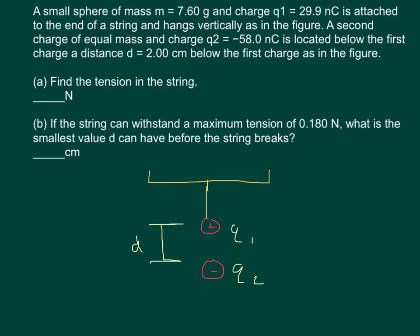Part A: Find the tension in the string. Part B: If the string can withstand a maximum tension of 0.18 newtons, what is the smallest distance value for d that you can have before the string breaks?